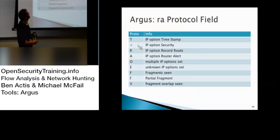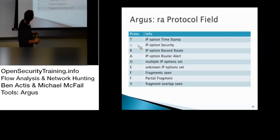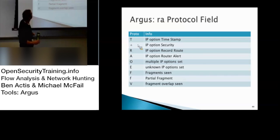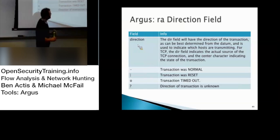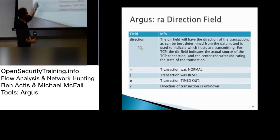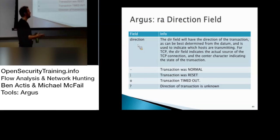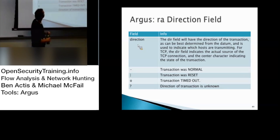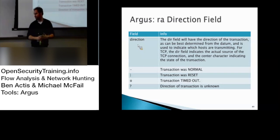You shouldn't see a lot of those so I'm not going to cover them. Timestamp T, optional security plus sign, record routes, multiple IP options. If there are fragments you'll see an F, with a fragment lowercase, and fragment overlap seen as B. Like YAF, you'll see a direction field indicating which way the flow of communication is going. If the connection was normal everything's good; if it was reset you'll see that indicated; always a timeout; and if there's no idea what was going on you'll see a question mark. This might be really important and subject to some interpretation regarding whether it's bidirectional.